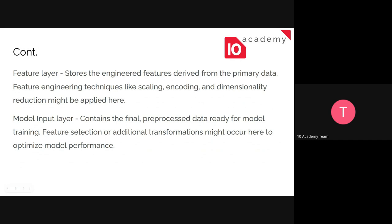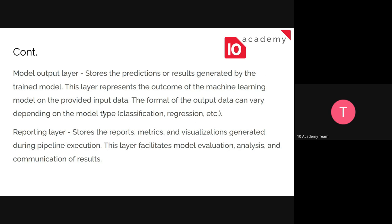The feature layer is where you do feature engineering on your primary data — things like scaling, encoding, and dimensional reduction, techniques we covered in week two. After preprocessing and feature engineering are done, the next step is the model input layer, where you prepare your data for training through feature selection and optimization.